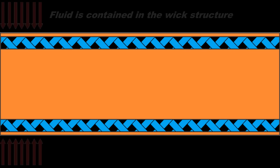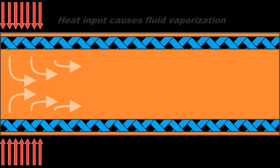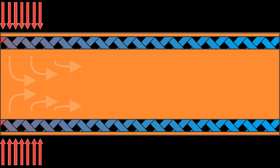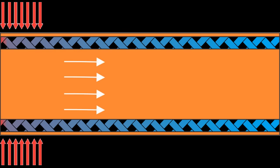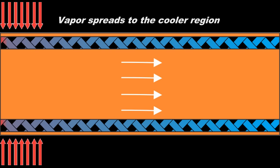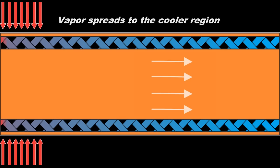When a heat source, such as an electronic component, generates heat, the fluid vaporizes at what is known as the evaporator section. The fluid vapor quickly spreads to the other end of the heat pipe using pressure generated by the temperature difference.